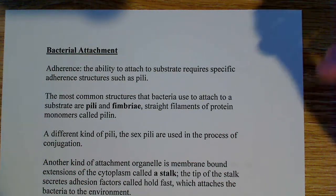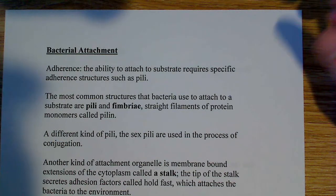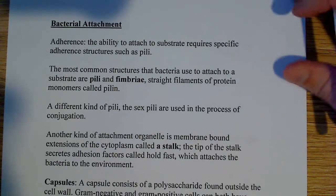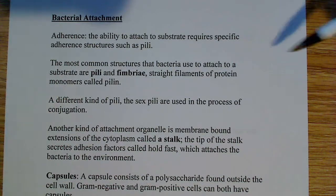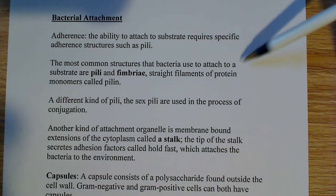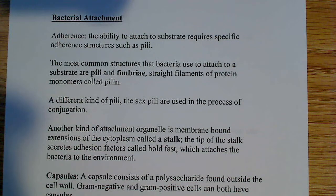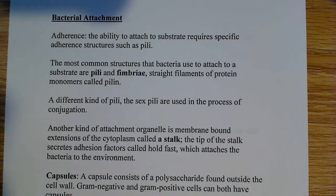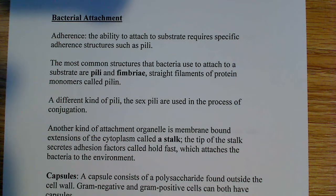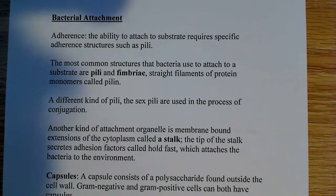Bacteria want to adhere to substrates — in some cases to form biofilms and other things in nature, which is important. The most common structures that bacteria use to attach to a substrate are pili and fimbriae. They are straight filaments of protein monomers called pilin. They're different from the pili you might have learned about previously, which is a sex pilus involved in conjugation and the transfer of genetic material from one cell to another.